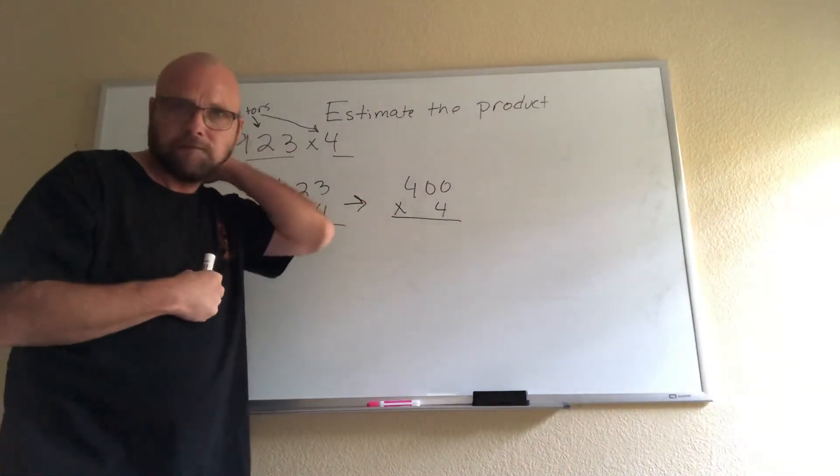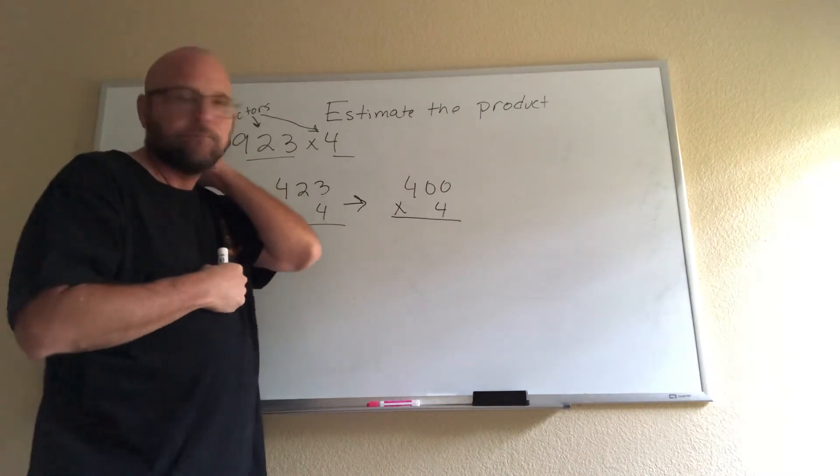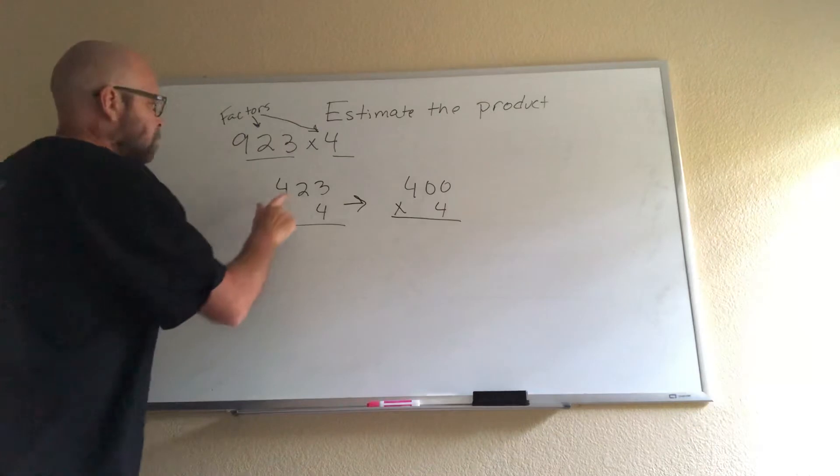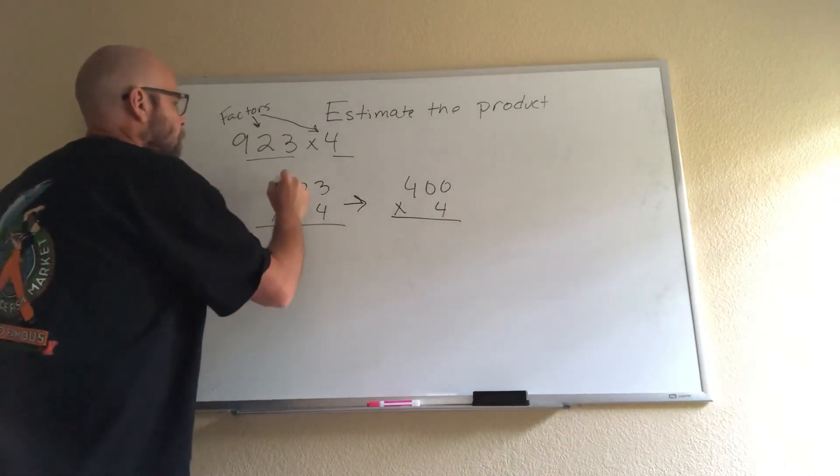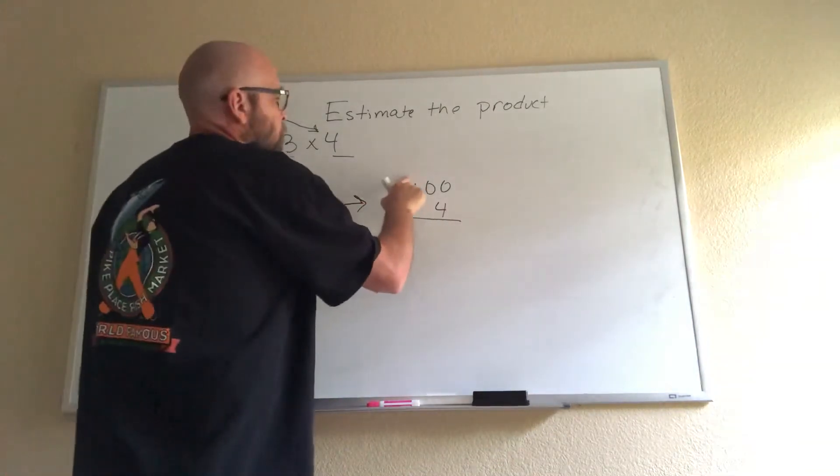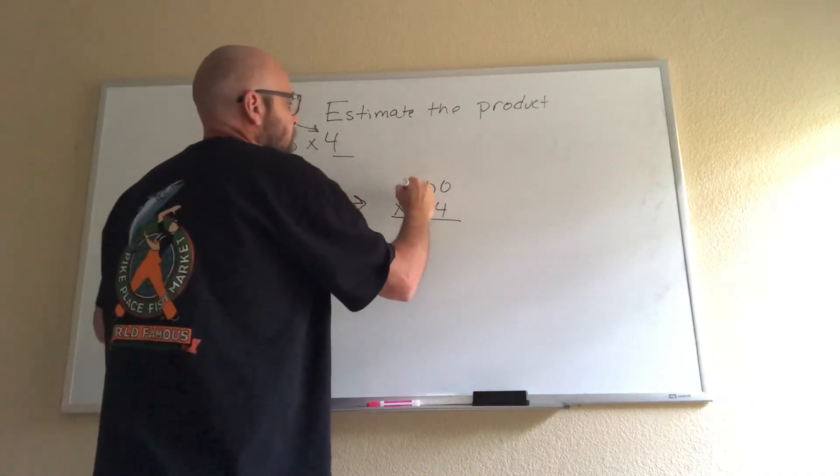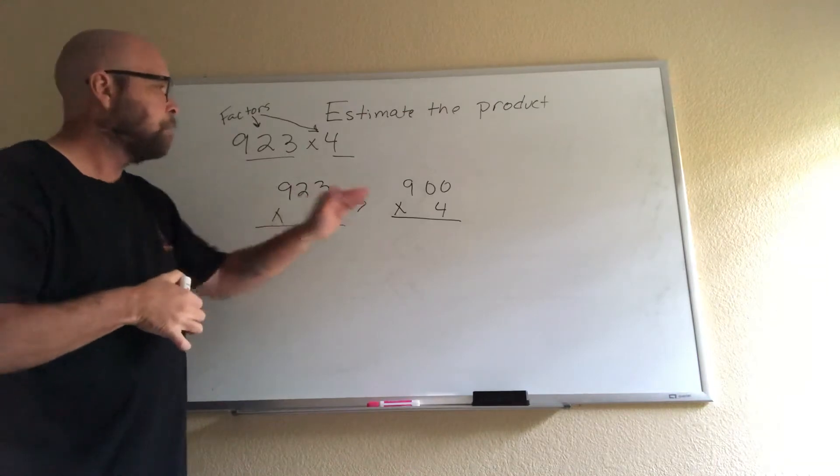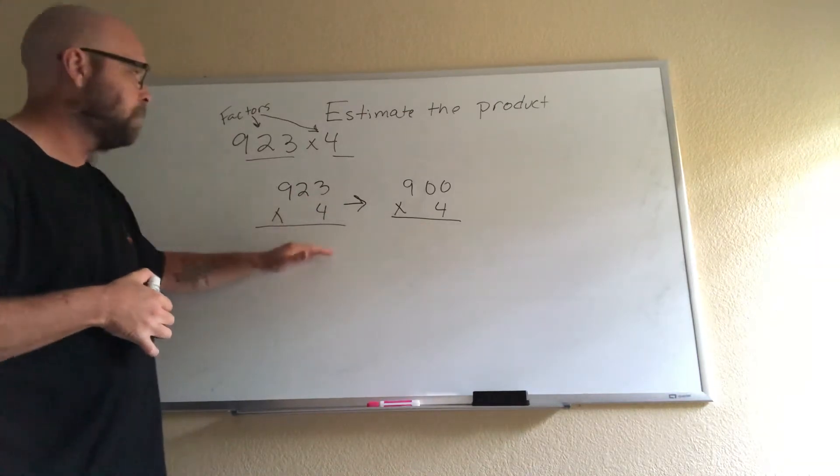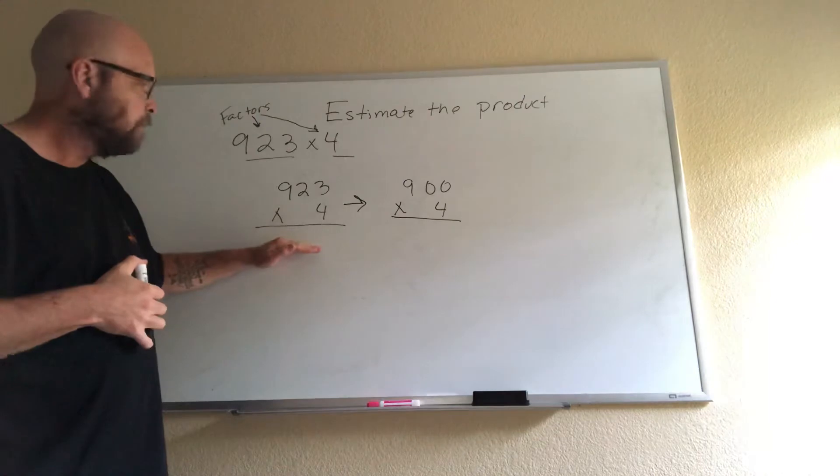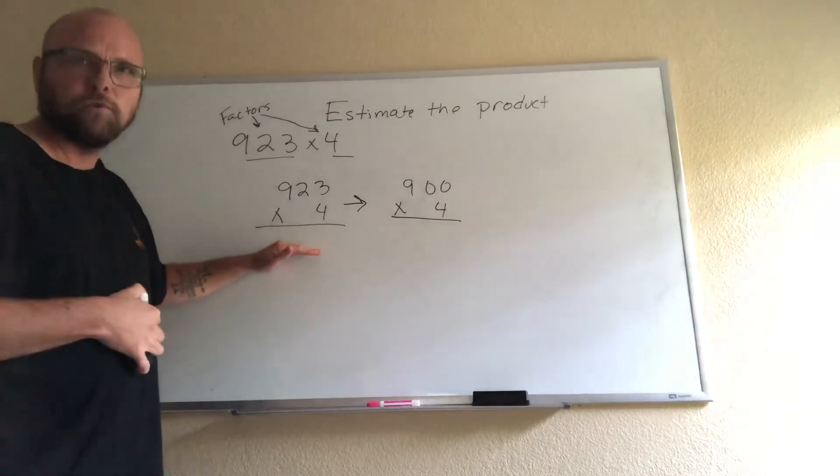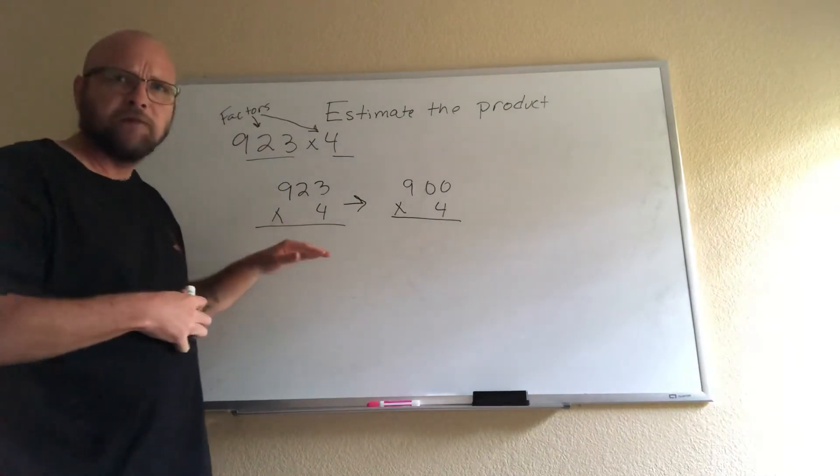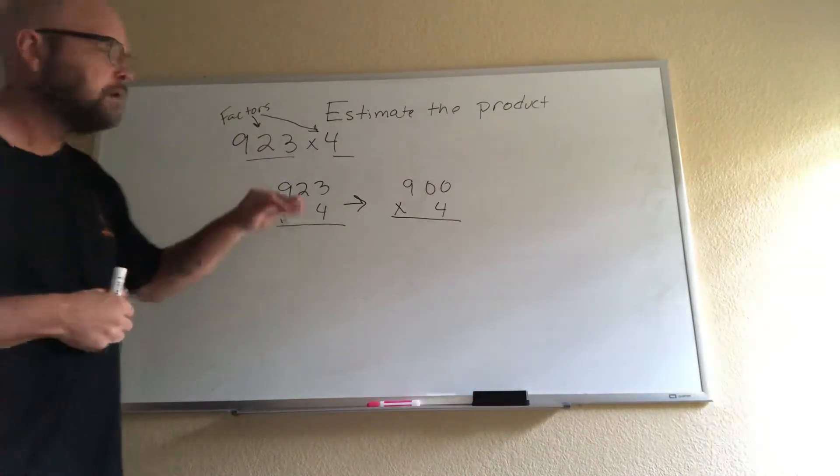Student: It's not 423, it's 923. Teacher: It is 923. So I'm going to change this to a 9. That doesn't change the fact that my product in my estimate is going to be smaller than my product in my actual real answer. Thank you for correcting me. You all got to correct me when I do silly stuff now.